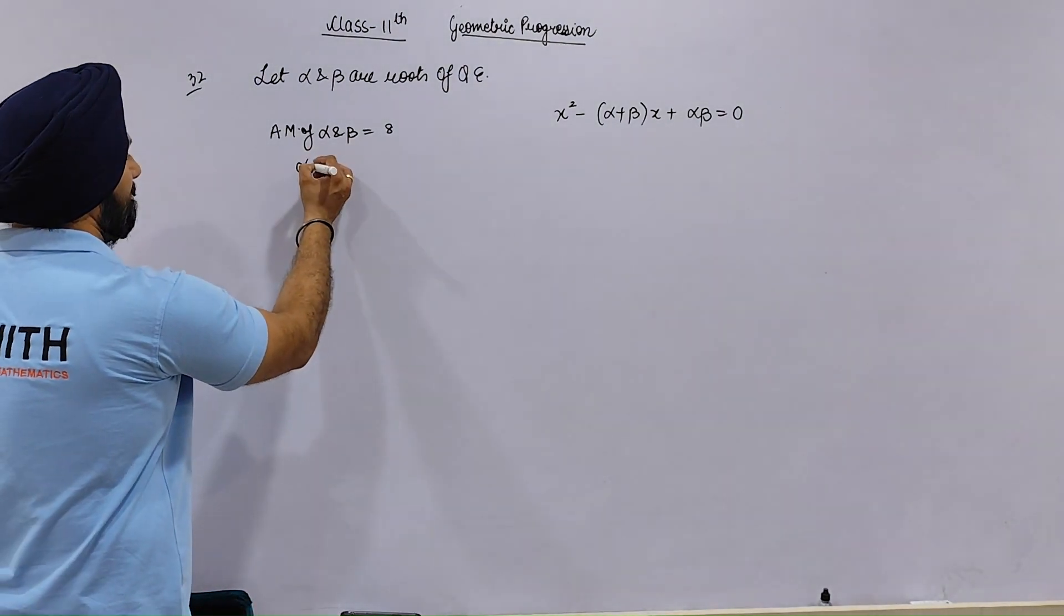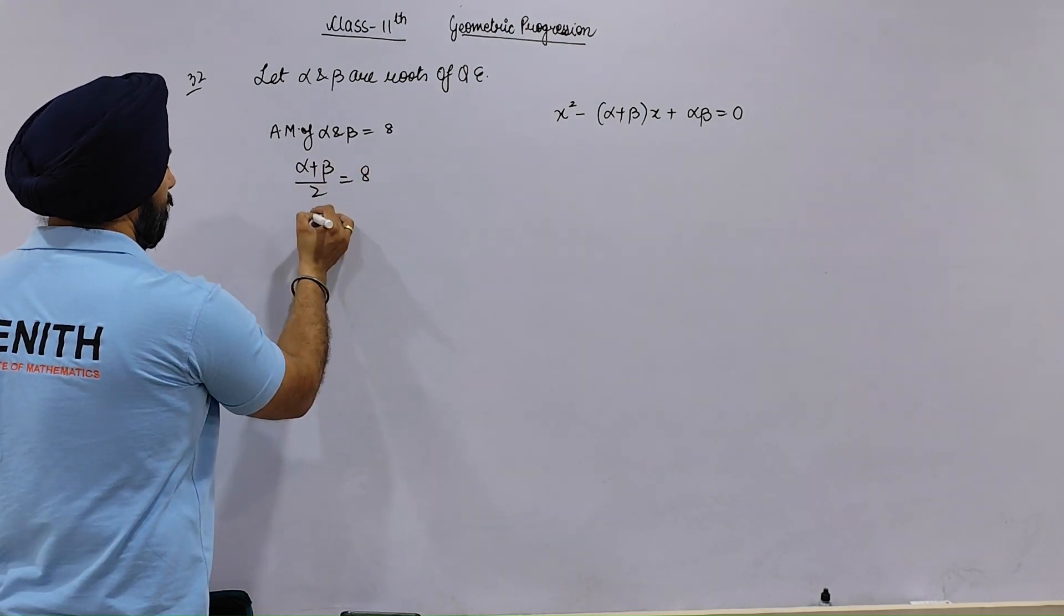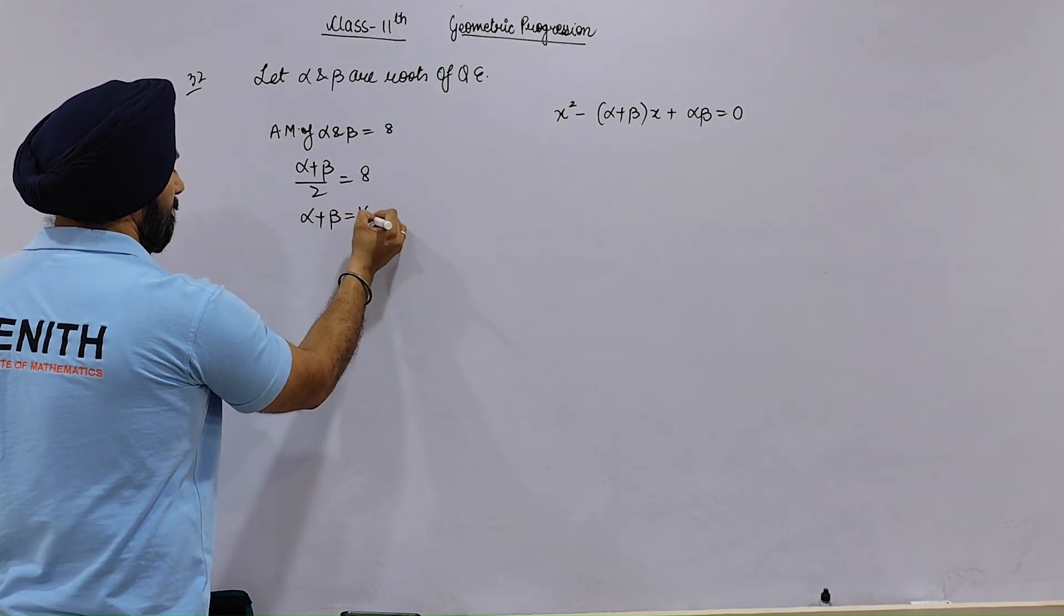Alpha plus beta by 2 is 8. What is this? 16.